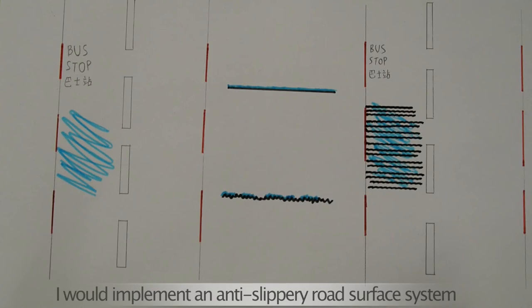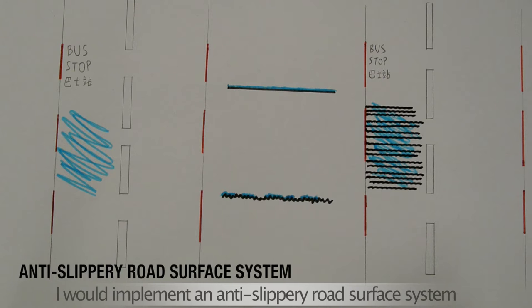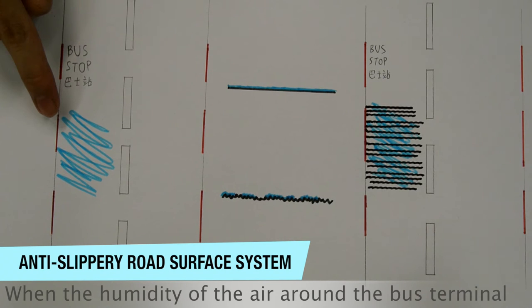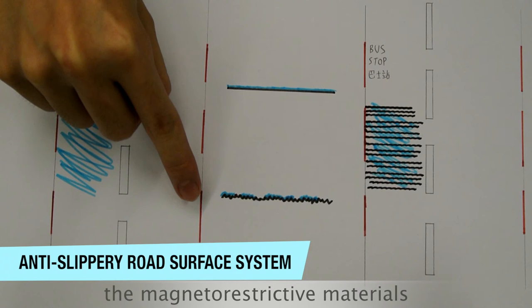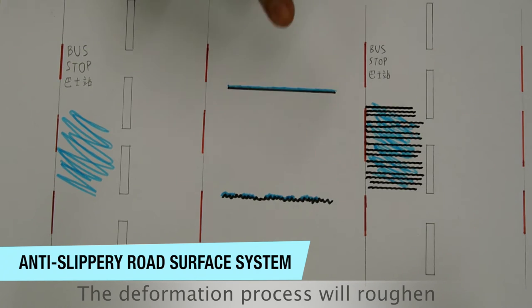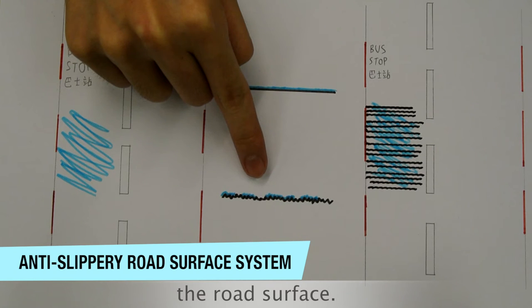I would implement an anti-slippery road surface system. When the humidity of the air around the bus terminal has reached a certain level, the magnetostrictive materials will be activated and deformed. The deformation process will roughen the road surface.